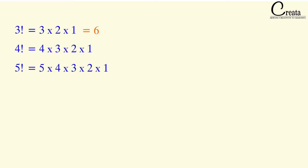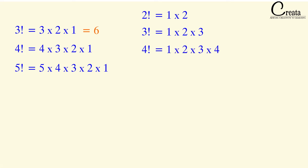We can also express factorial in the reverse order — multiplying all whole numbers from 1 up to the number whose factorial we are calculating. For example, 2 factorial is 1 × 2, and 3 factorial is 1 × 2 × 3. Similarly, 4 factorial is 1 × 2 × 3 × 4, and 5 factorial is 1 × 2 × 3 × 4 × 5. Both representations are the same — just different order.